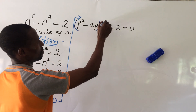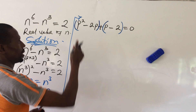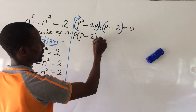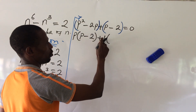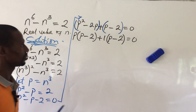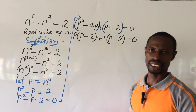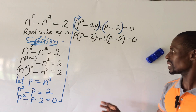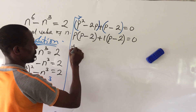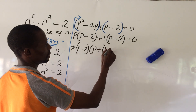We put terms in brackets and factor out common terms. From the first bracket, p comes out leaving p minus 2. From the second bracket, 1 is common, leaving p minus 2. Since the terms in the brackets are the same, we take the common factor, giving us p minus 2, times p plus 1, equal to 0.